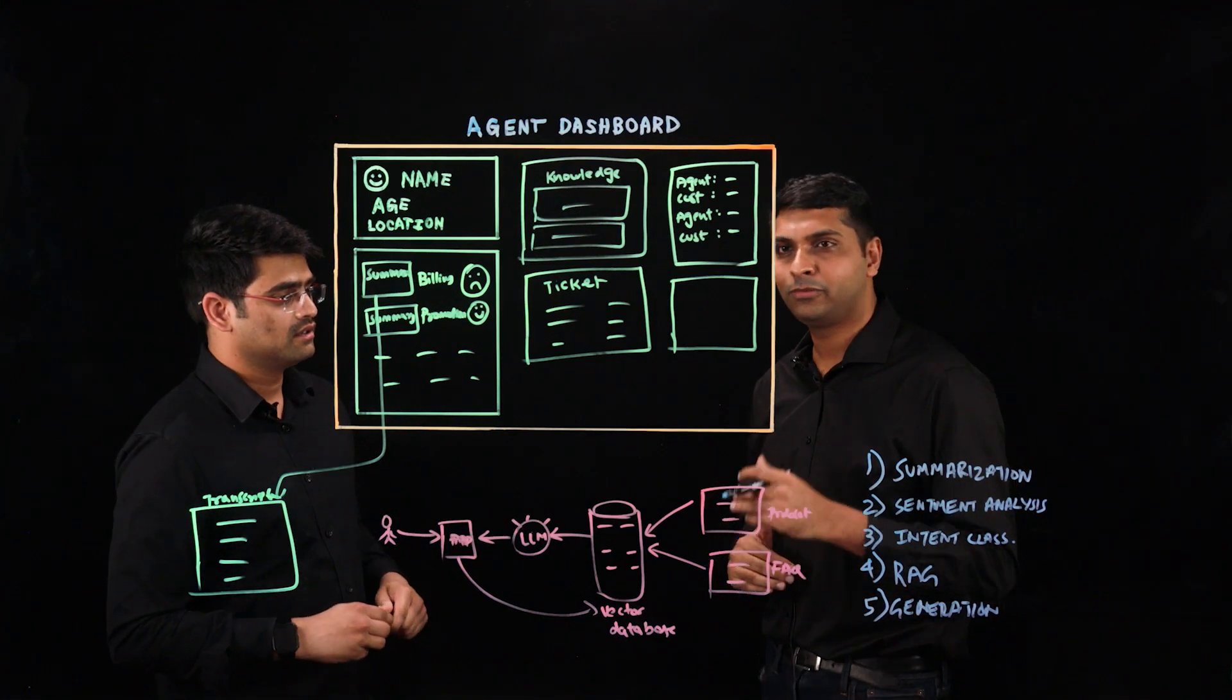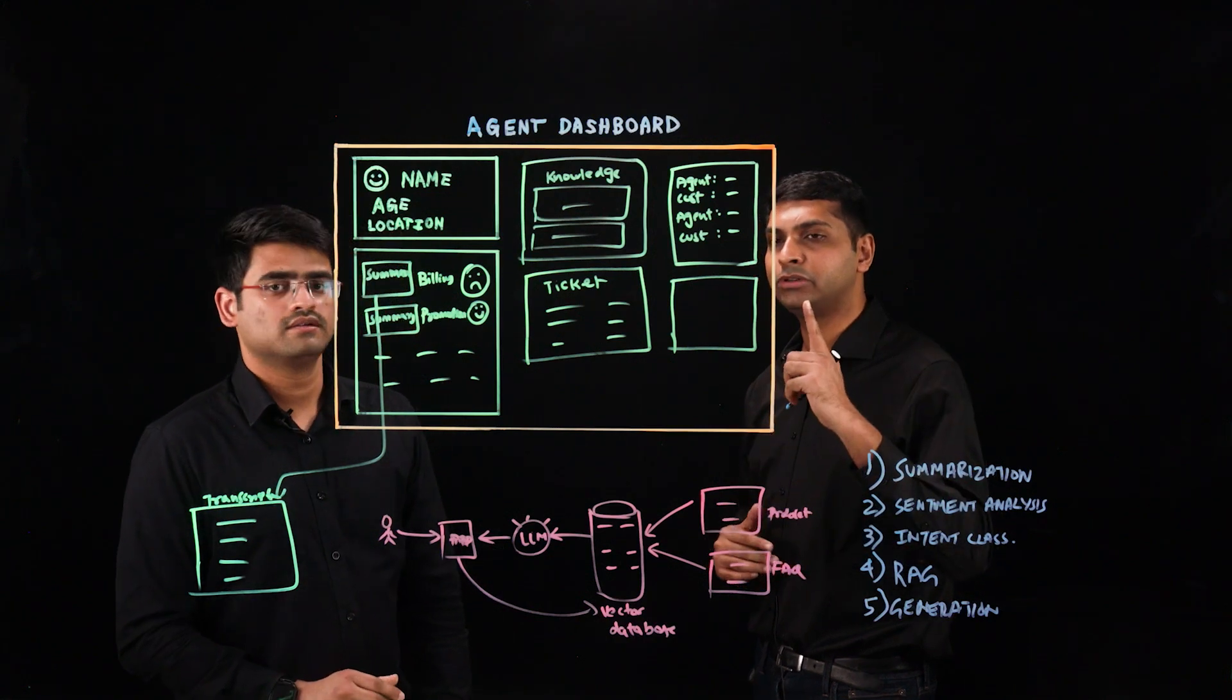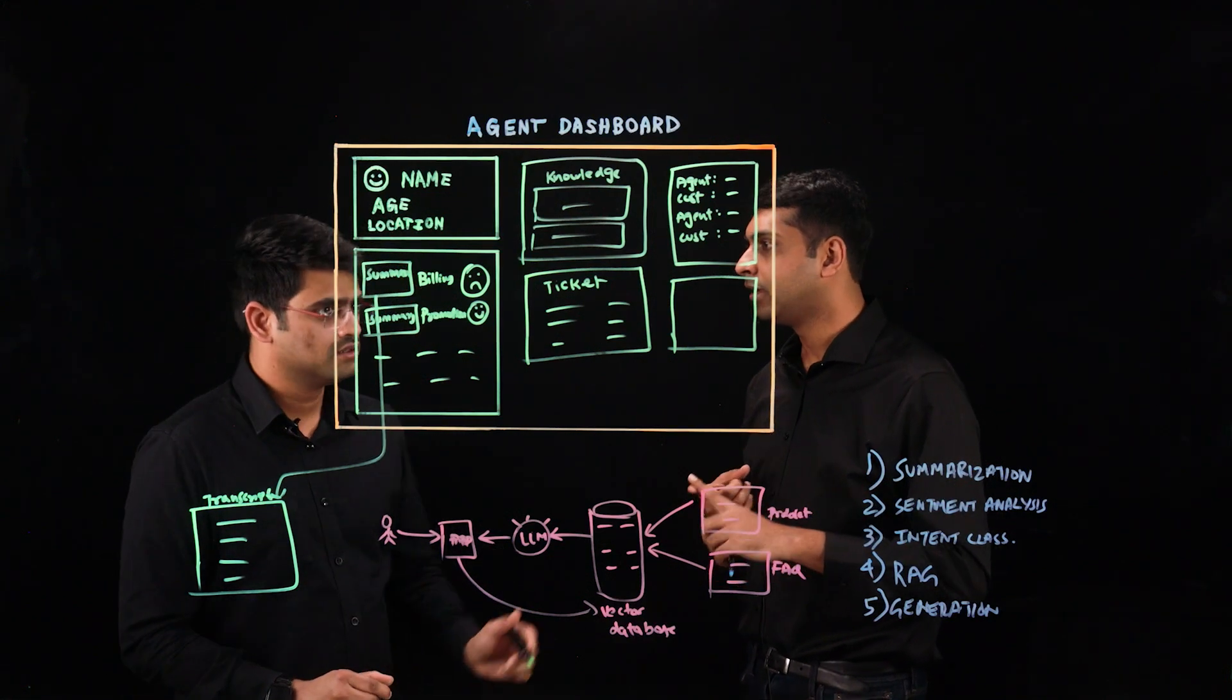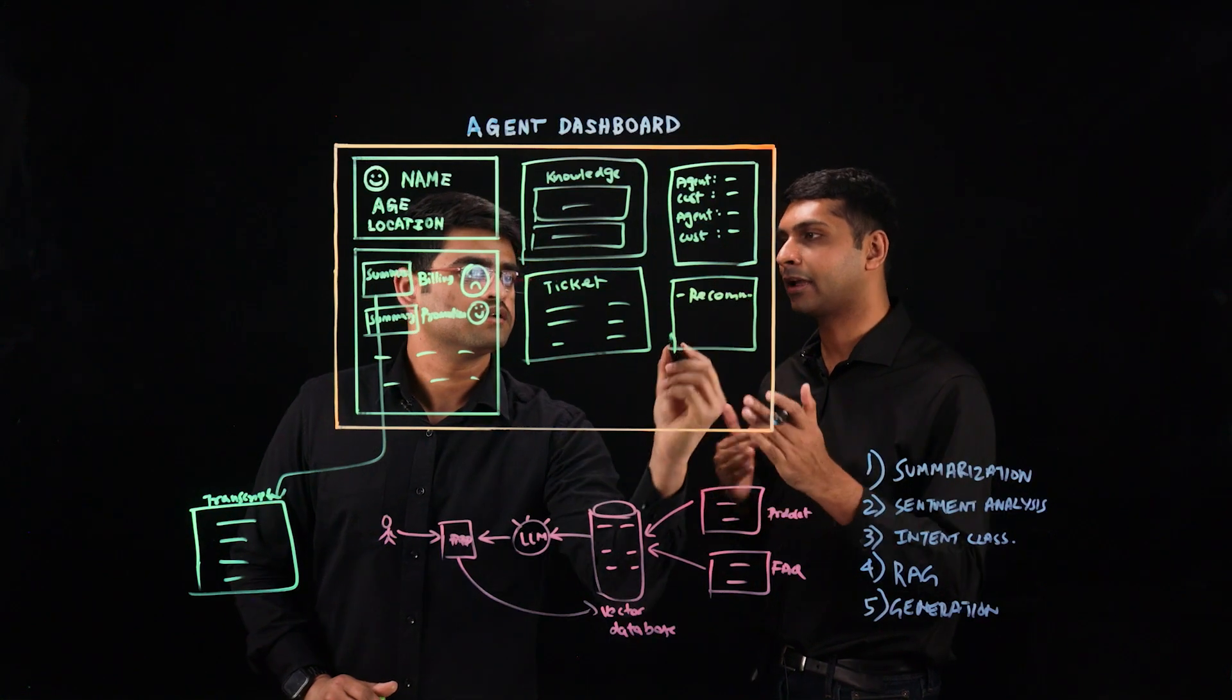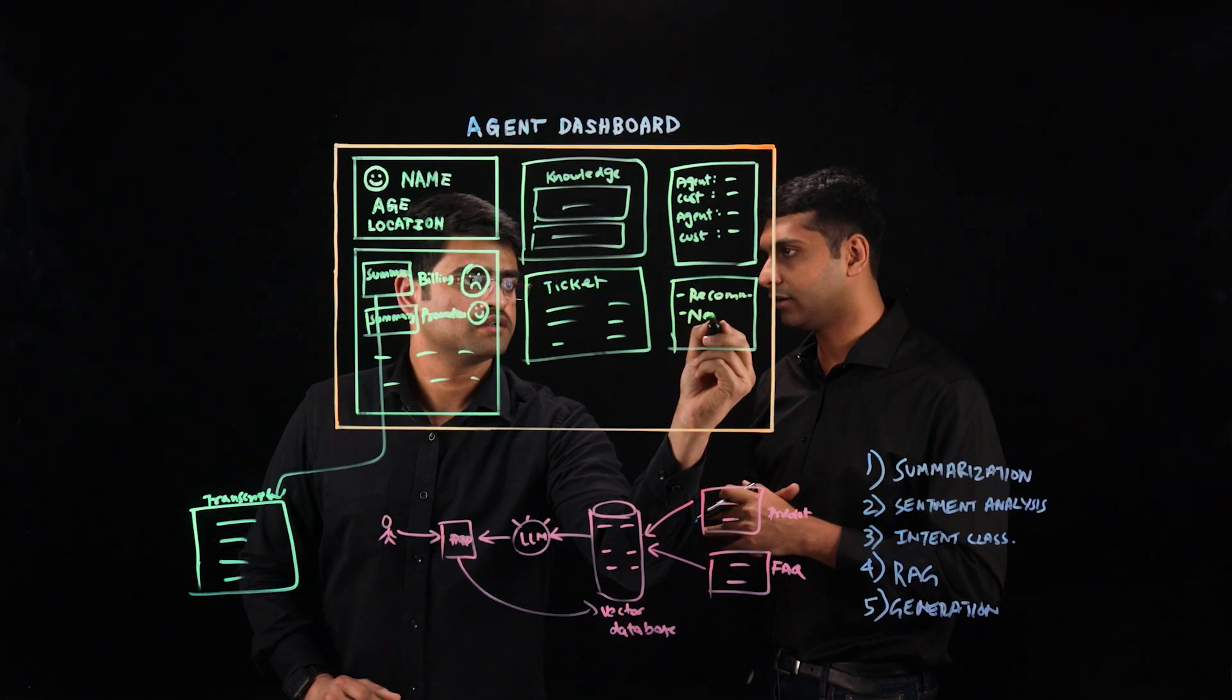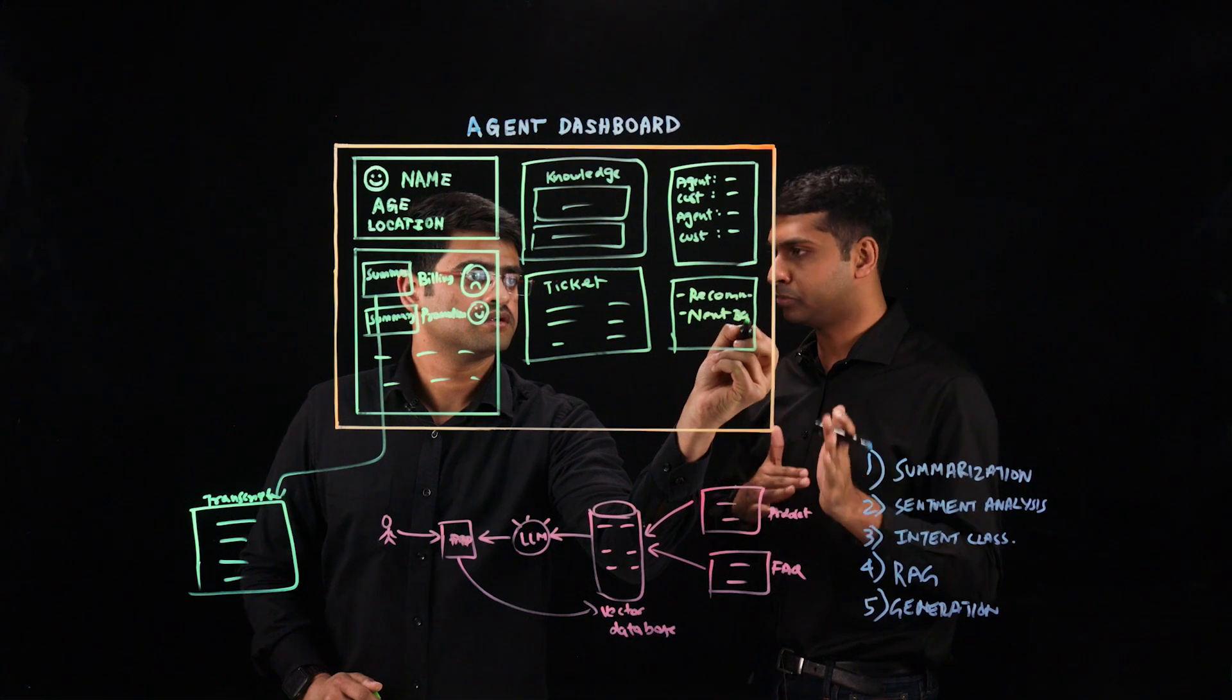And then we can also do a couple of other things. So we can do things like product recommendation where a large language model can automatically recommend the product based on the particular customer that it can be also personalized.